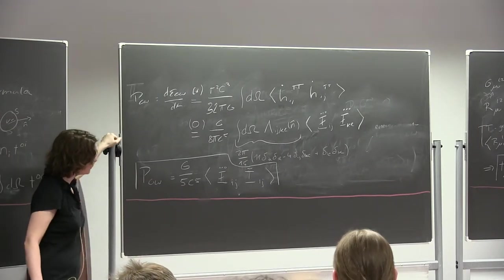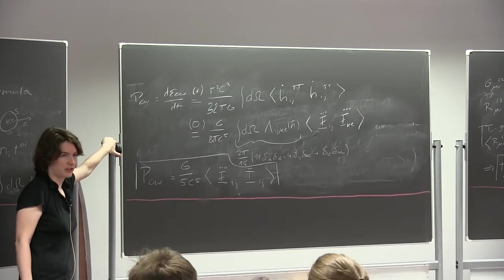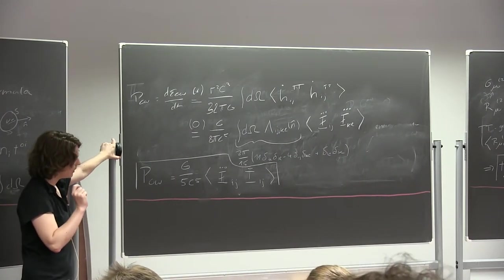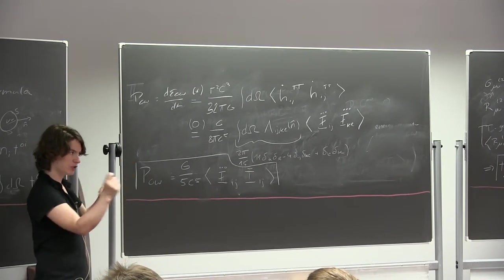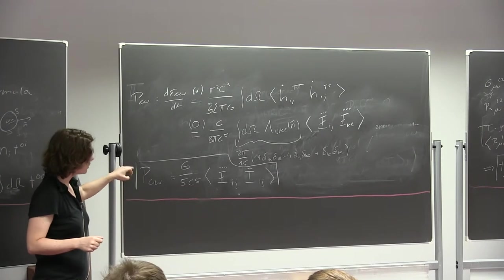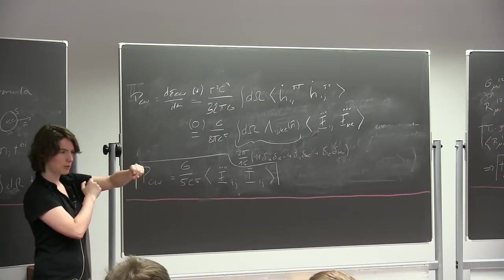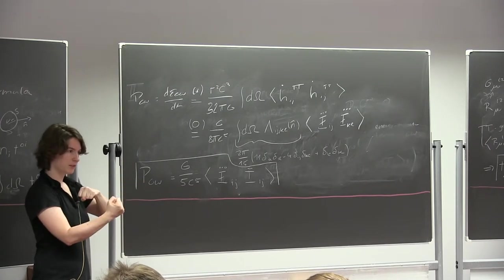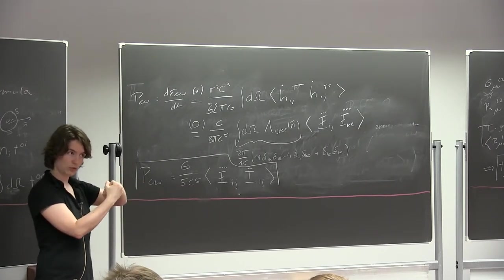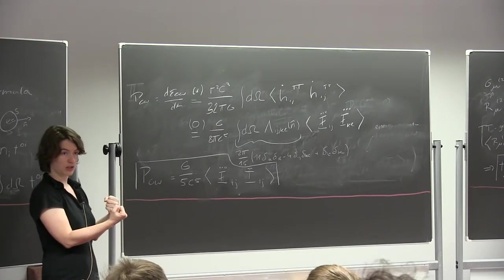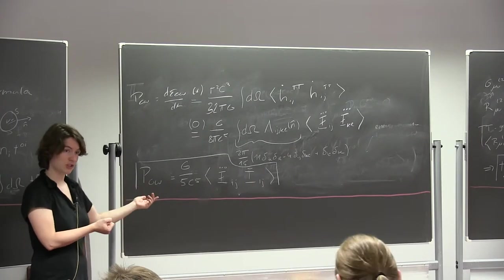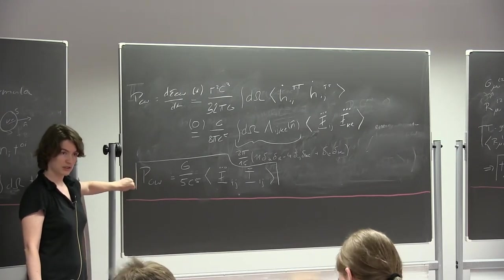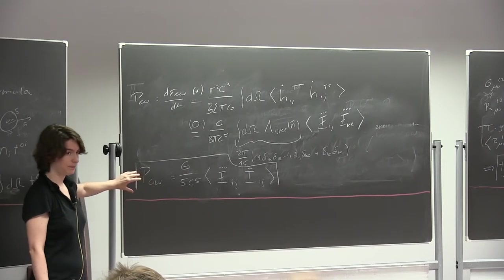This formula is important historically: the first detection of gravitational waves was indirect. People observed a system of pulsars in a binary orbit. From Newtonian mechanics you'd expect them to orbit forever in a stable orbit. Instead, they were observed spiraling inward — which is only possible if energy is being lost. The only way to lose energy is through gravitational waves. This formula correctly predicted the rate of energy loss observed in that system, providing the first indirect evidence of gravitational waves, well before LIGO.